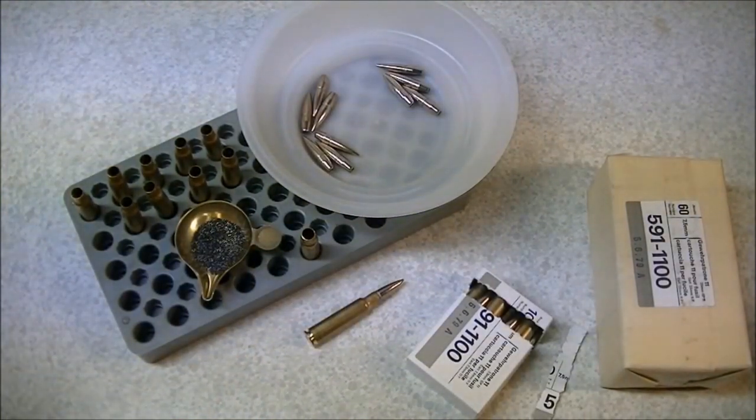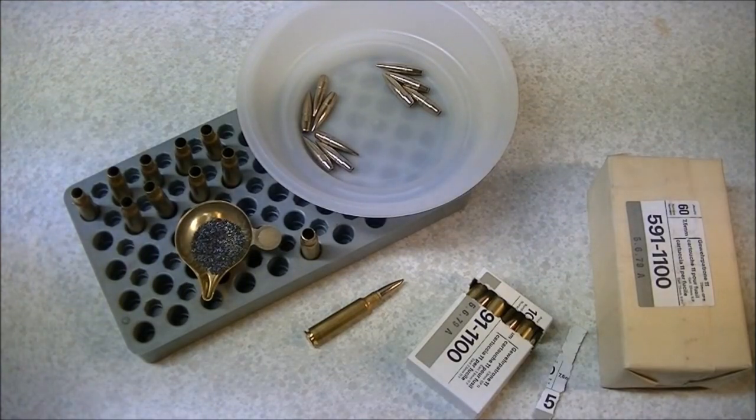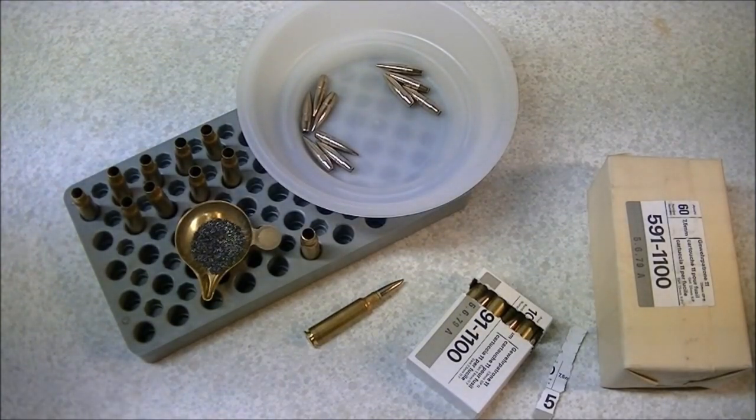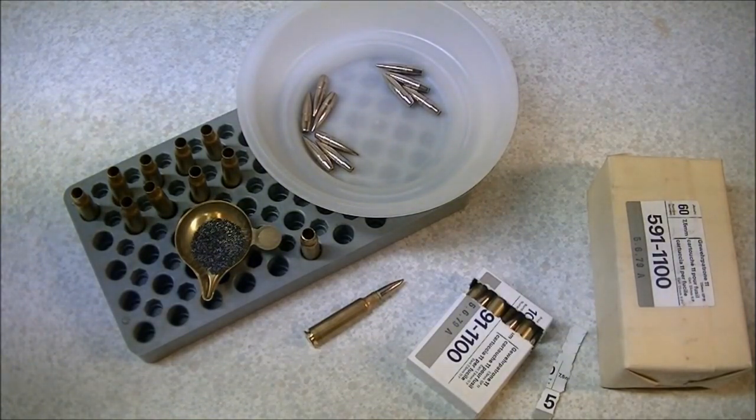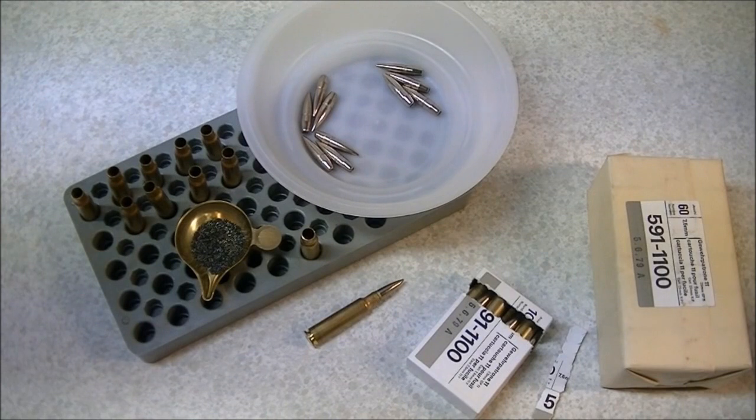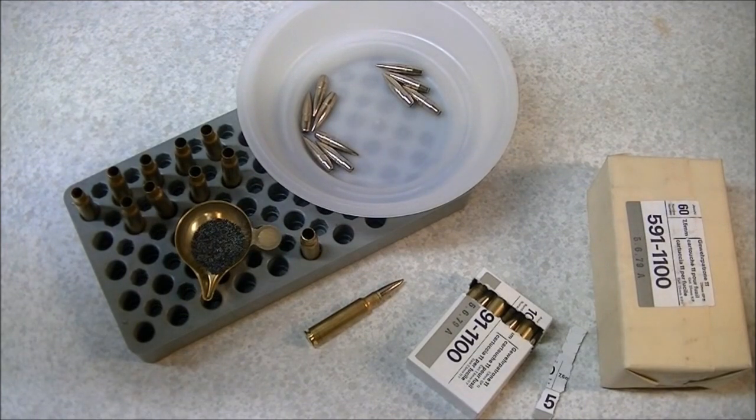Okay, to wind up this video on my discussion of the GP-11 Swiss round, I just like to share with you some of the results I got when I chronographed this ammunition out of my K31 rifle. With my chronograph set up 10 feet from the muzzle of the rifle, I fired 10 shots with an average velocity of 2,588 feet per second, an extreme spread of 62 feet per second over the 10 shots, with the lowest speed shot 2,551 and the highest speed shot 2,613.